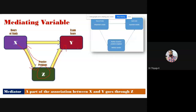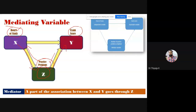Here Z acts as a mediator between the two variables X and Y. For example, hours of study is the independent variable and exam score is the dependent variable. The mediating variable is problem practice: if I increase the hours of study, the number of problems attempted may increase. If I study for five hours I may solve five problems; if I study for ten hours I may solve ten problems. Therefore there is an influence on Y through Z. That is why it is called a mediating variable.